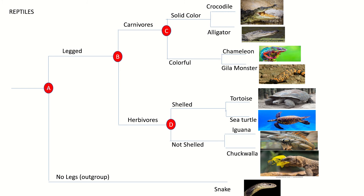Now we can look at the tree. Our A node represents our most recent common ancestor, where it diverged into a legged and no-legged group. Our no-legged group is the out group, and is represented by the snake. I chose the snake because it is the least similar to all other reptiles on this chart, as it has no appendages.